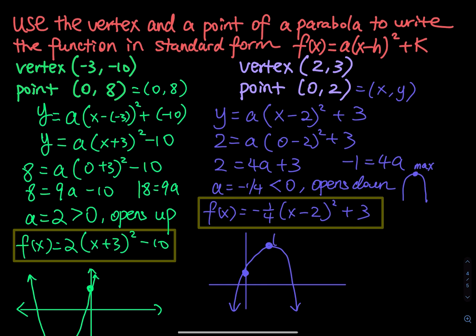So the vertex at 2, 3 is the maximum, and the other point is at 0, 2. That is the end of this video. If you like the way I explain problems, give me a thumbs up, a subscribe, and I will meet you all in the next lesson.